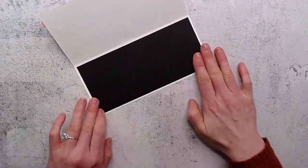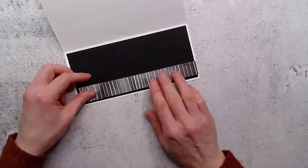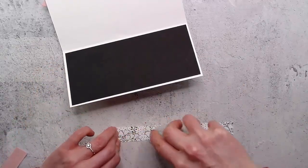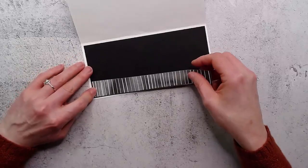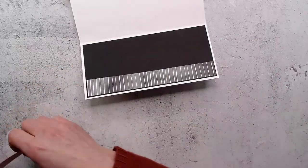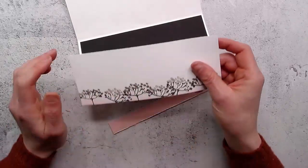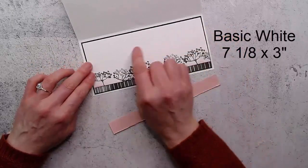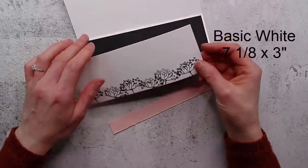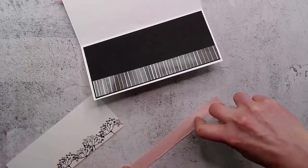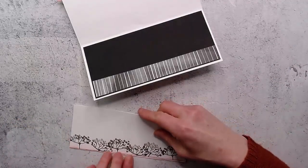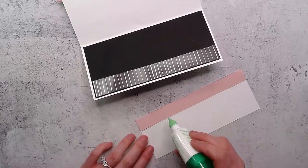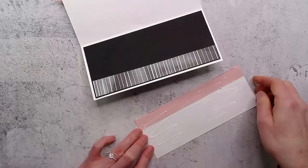Now I want to do something fun on the inside. I've got that same black mat that is seven and a quarter by three and a quarter, and then I'm going to put on a strip of that same stripe. Then I've got another strip of blushing bride, and then I've cut a piece of white that's seven and an eighth by about three and three quarters. I'm just going to adhere these together.